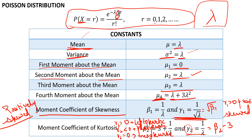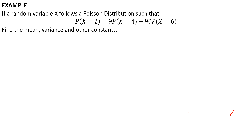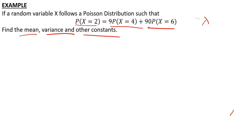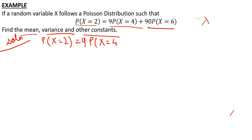Let's see an example. If a random variable x follows a Poisson distribution such that probability of x equal to 2 is equal to 9 times probability of x equal to 4, plus 90 times probability of x equal to 6, find the mean, variance, and other constants. To find all these constants, the only thing we need to compute is lambda — everything revolves around lambda.